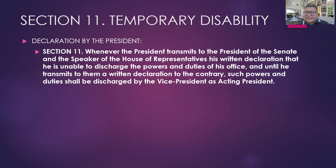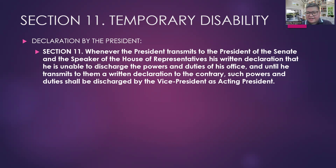He cannot simply call and say he can no longer discharge his duties — that is not allowed. What he must send is a written declaration stating that he is already unable to discharge the powers and duties of the office of the President. And until when will this last? Since this is only a temporary disability, not a permanent one, it will last until he transmits again a written declaration to the contrary.